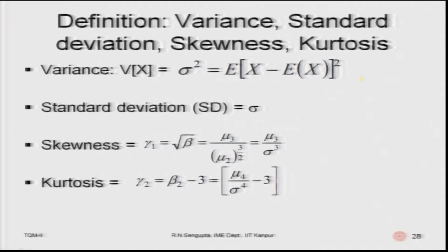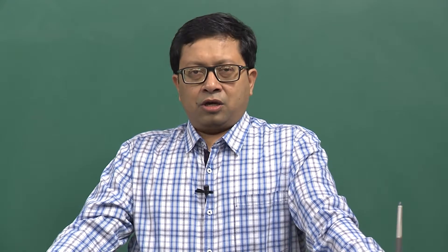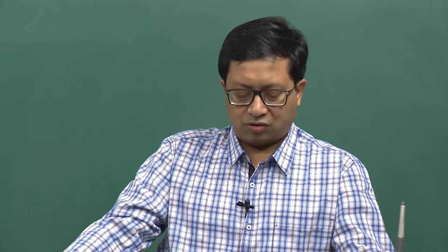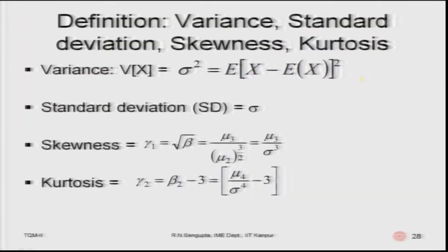Definitions of variance, standard deviation, and skewness are measures of dispersion. Variance is given by the expected value of the squared difference between each realized value and the mean — summed and divided by n, or as an integral in the continuous case. Standard deviation is the square root of variance. Skewness and kurtosis formulas are given for reference and will be used if required.